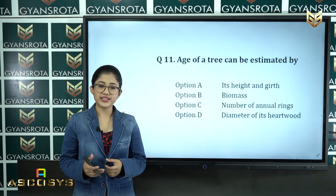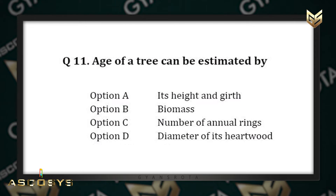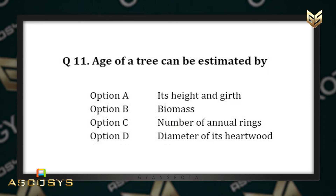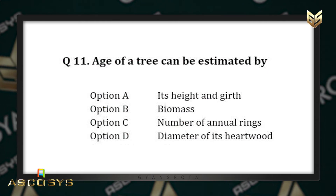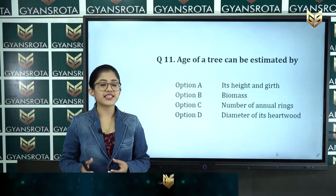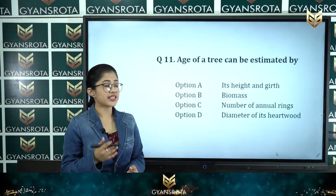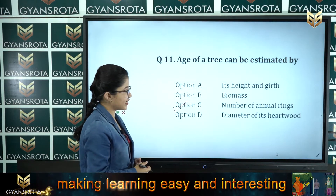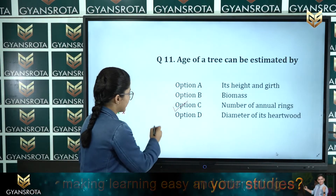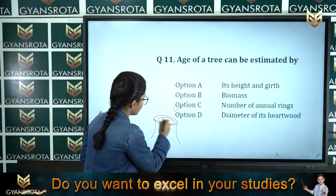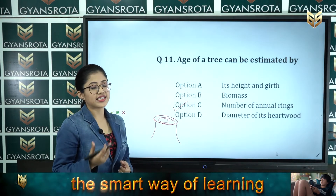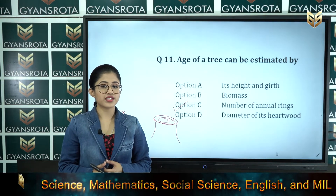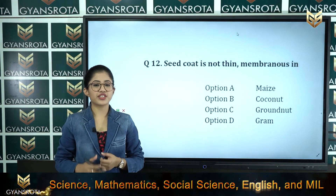Question number eleven: the age of a tree can be estimated by — option A: its height and girth, option B: biomass, option C: number of annual rings, option D: diameter of its heartwood. This is from anatomy of flowering plants. The correct answer is option C — the number of annual rings. When you cut a tree trunk and count the concentric rings, you can estimate the age of the tree.